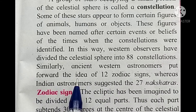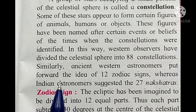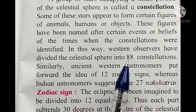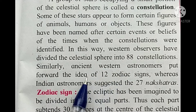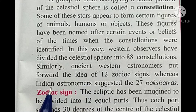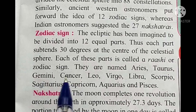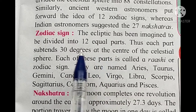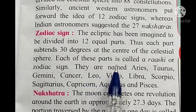Ancient Western astronomers put forward the idea of the 12 zodiac signs, whereas Indian astronomers suggested the 27 nakshatras. The ecliptic has been imagined to be divided into 12 equal parts. Thus, each part subtends 30 degrees at the centre of the celestial sphere. Each of these parts is called a rashi.